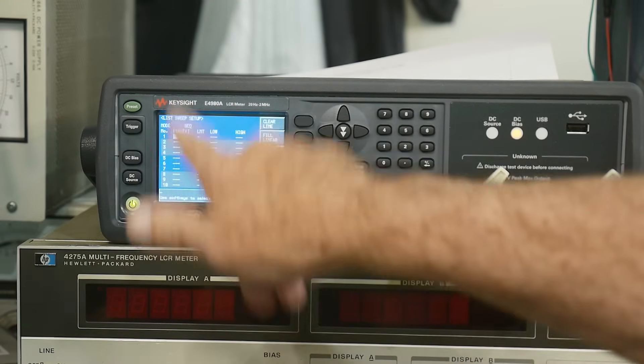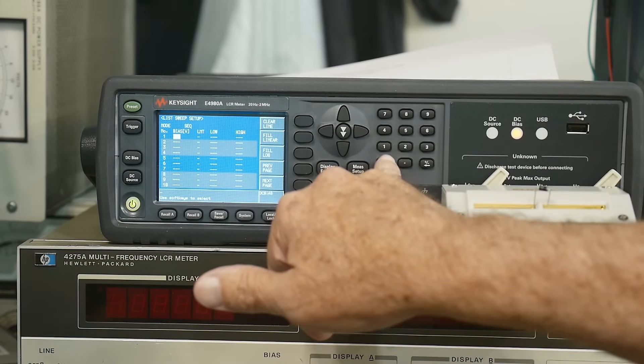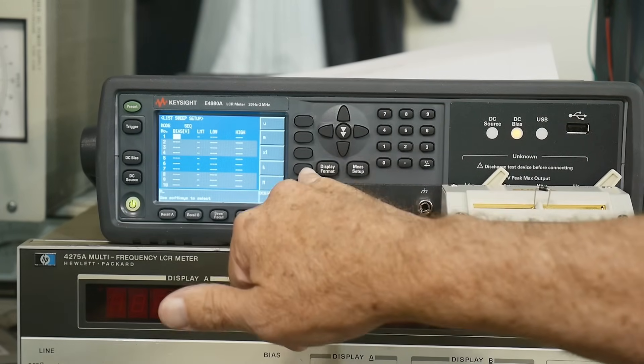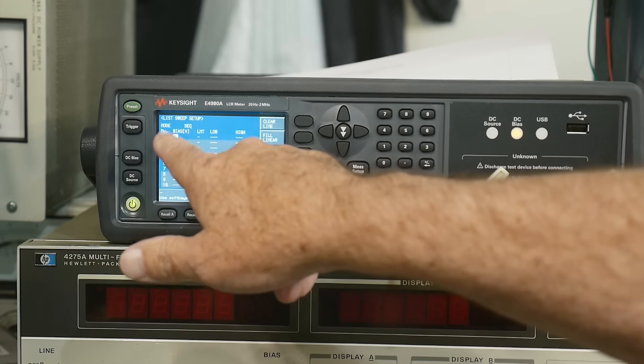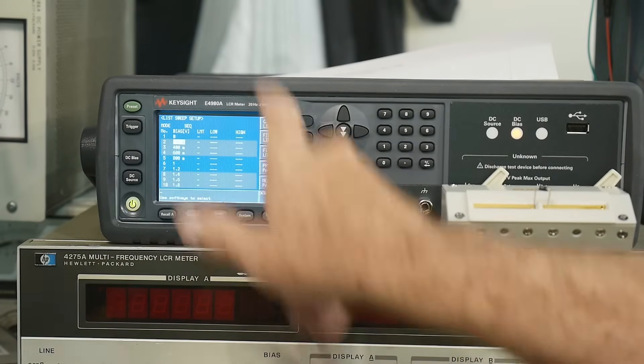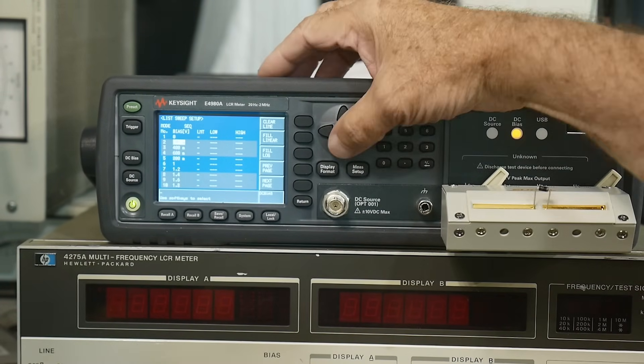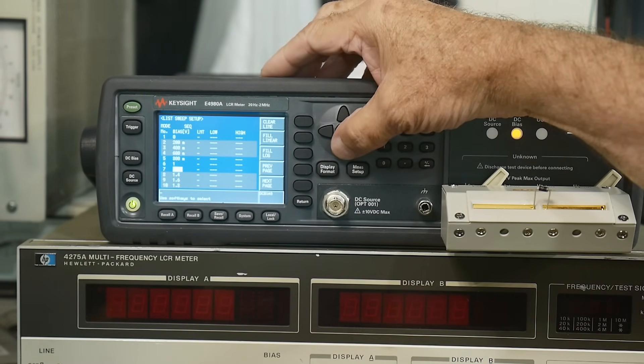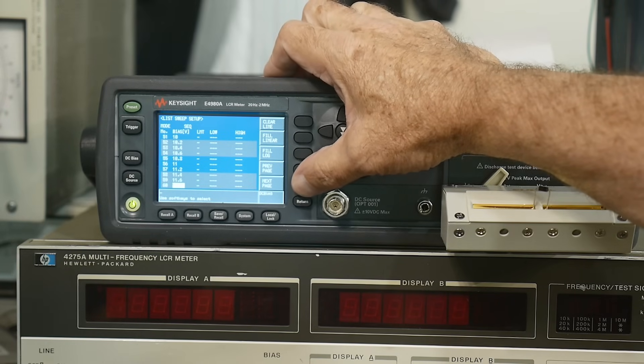You can go down to the first entry in the table here, and I'm going to put in zero volts. I'm going to start at zero volts. Okay. And then I can go to the next entry and I can just say fill linear. And what it does is it automatically fills the table up in linear steps. Next page, next page, next page. It has 201 points.